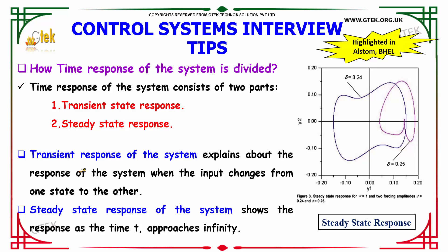How is the time response of the system divided? It consists of two parts: the transient state response and the steady state response. The transient response describes the response of the system when the input changes from one state to another. The steady state response shows the response as time t approaches infinity.